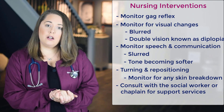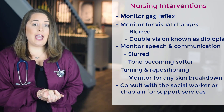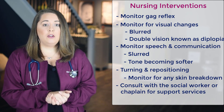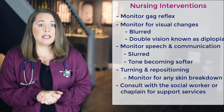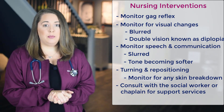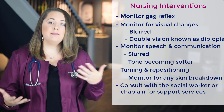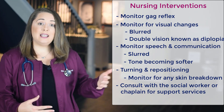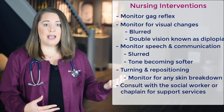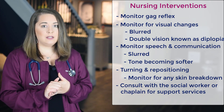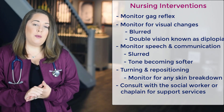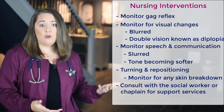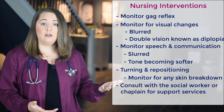Monitor the patient's gag reflex by checking for aspiration or choking signs. Also monitor for visual changes like blurred or double vision, known as diplopia, because as paralysis from Guillain-Barré sets in, it affects every single muscle including the eye muscles. Monitor the patient's speech and communication — if speech becomes slurred or the tone becomes softer, take note of that.